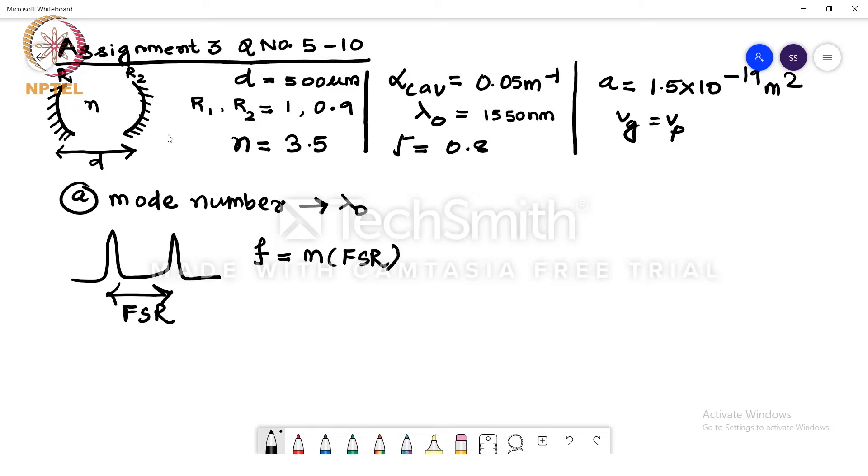So any supported frequency is going to be an integer multiple of FSR. Now we know that if we simplify this expression, we know that f is c by lambda equals m into c by 2nd. Now if we cancel out the c, lambda or lambda 0 here, the central wavelength will be equal to 2nd divided by,